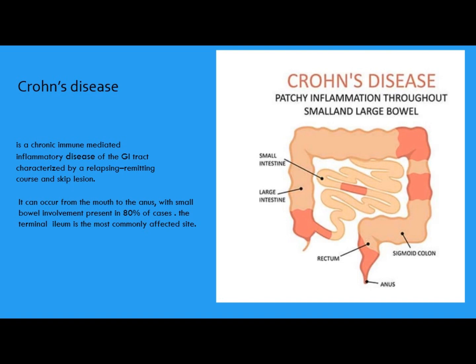Crohn's disease is a chronic disease of the bowel and mostly it starts from the mouth to the anus, but mostly in the small intestine, about 80%, and in the small intestine mostly in the terminal area. It is characterized by skip lesions and it is a relapsing and remitting disease, but it can also occur in the colon, sometimes in both small bowel and colon, and sometimes in the colon alone.